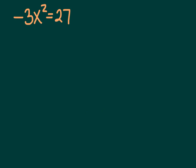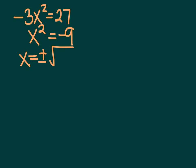Here's another: negative 3X squared equals 27. Divide both sides by negative 3 — X squared equals negative 9. X equals plus or minus the square root of negative 9, and we know that's 3i. So X equals plus or minus 3i.